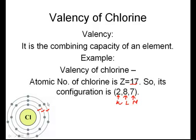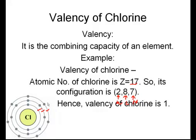In order to attain stability, that is nothing but the octet configuration for chlorine, it requires one more electron, which is nothing but the combining capacity of chlorine. Hence, the valency of chlorine is 1.